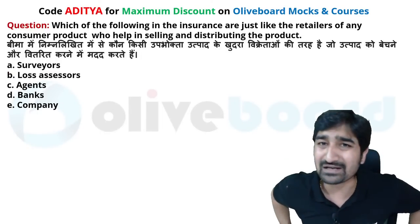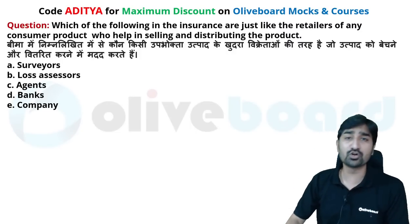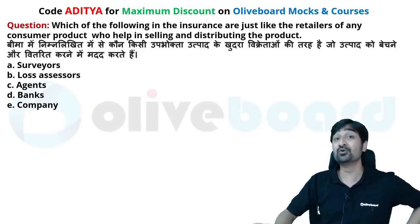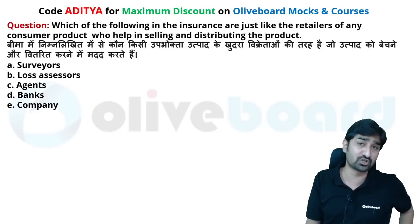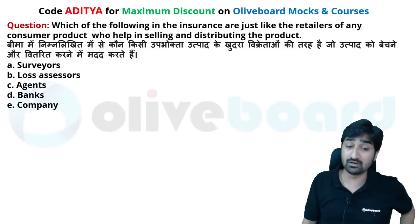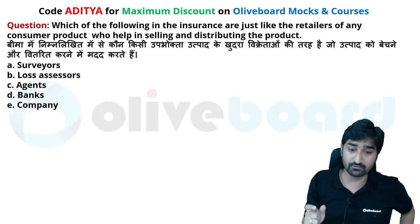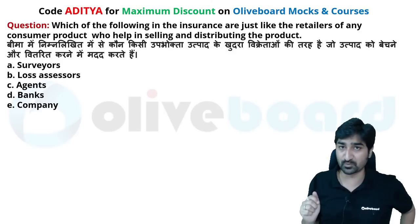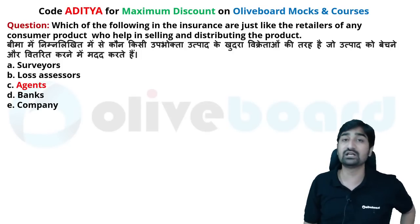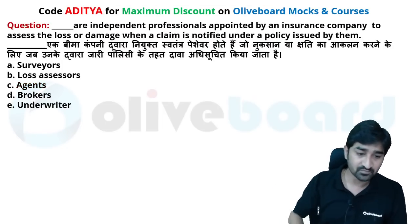I'm not sure how deeply ECGC will ask insurance awareness questions, but in one hour you will be able to learn these things and may get 3-4-5 questions based on insurance awareness. Which of the following in insurance is like a retailer, from where any customer can buy an insurance product? The work of a retailer in the insurance sector is done by agents.